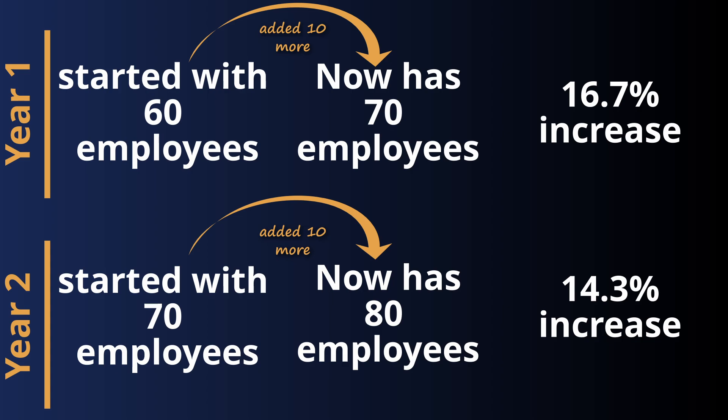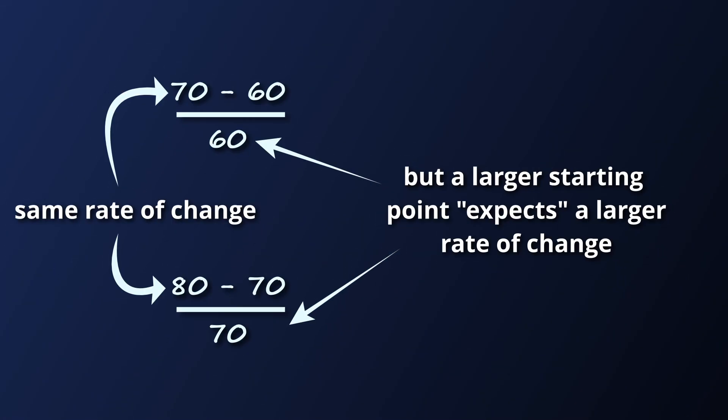In this example, percent change makes sense because you would expect a larger company with 70 employees to add more employees over the year than they did when they had 60. So the percent change is revealing that the company fell short of increasing employees at the same rate as before — hence 16.7 percent the first year and only 14.3 percent the next. That works perfectly. The reason it works is because the starting point is relevant — the starting value of 60 or 70 is relevant to the final value.